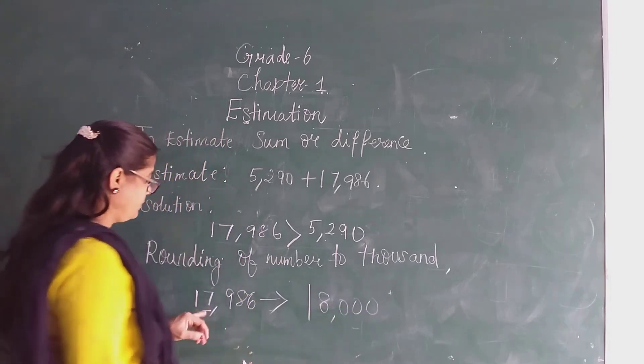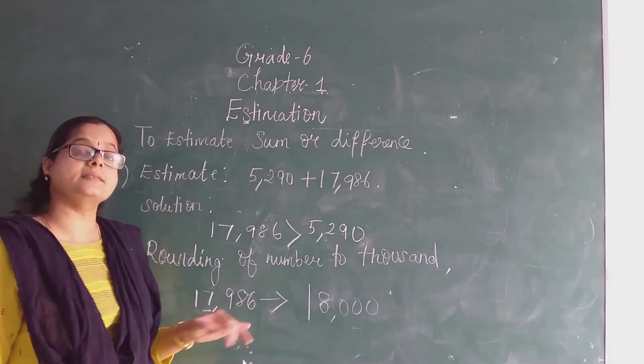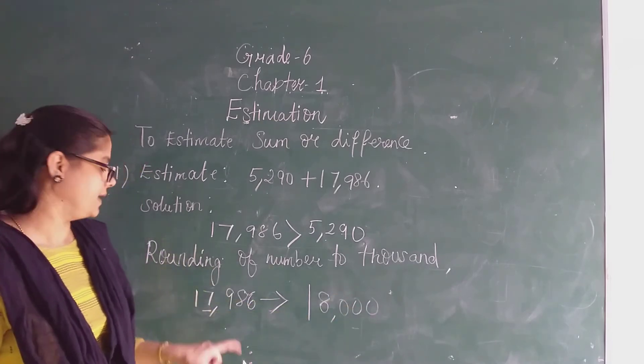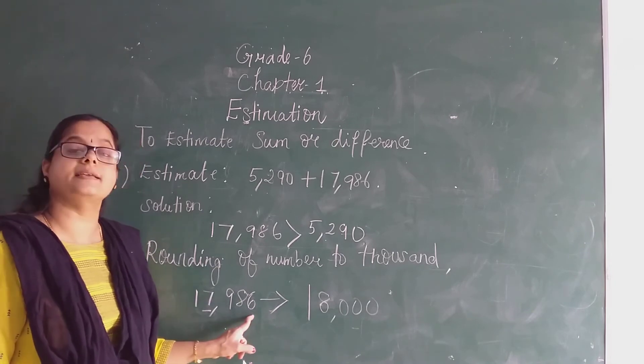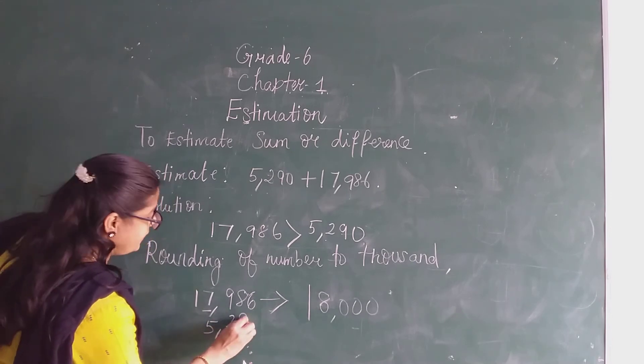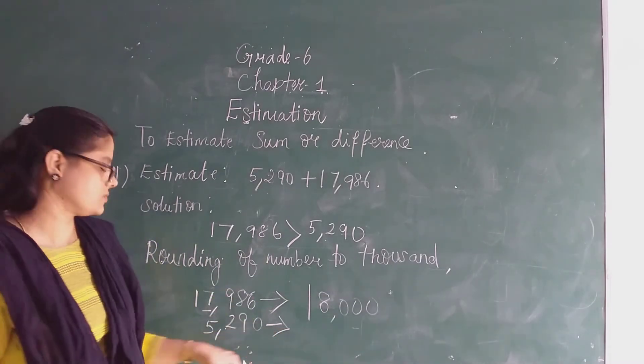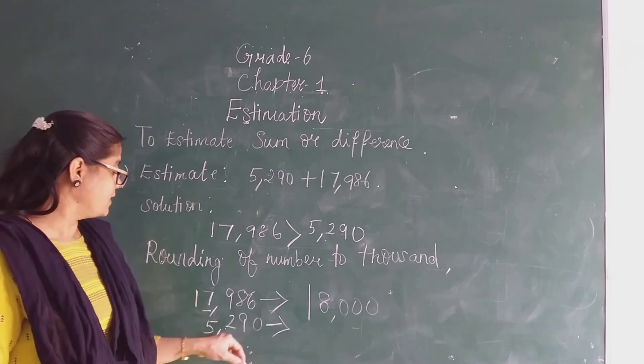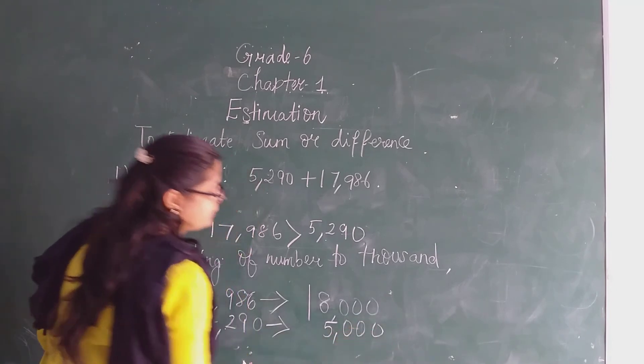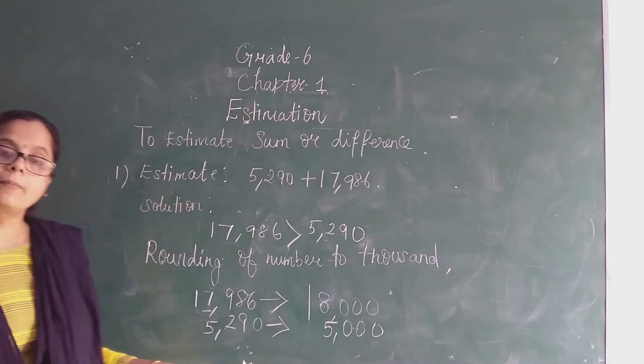Because 7,986 is nearer to 8,000. 7,986 is nearer to 8,000 compared to 7,000. So it will become 18,000. This 17,986 will become 18,000. Next, 5,290. Round it off to thousand. Since it is 5,290, it will become 5,000. So this will become 18,000, this 5,290 will become 5,000.